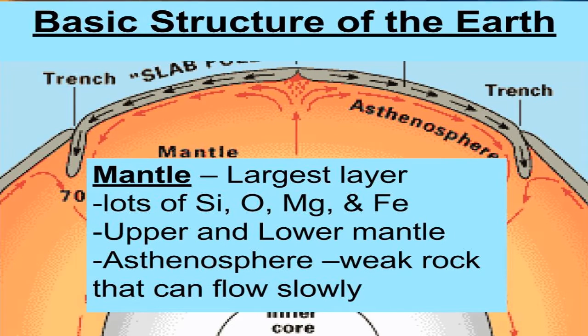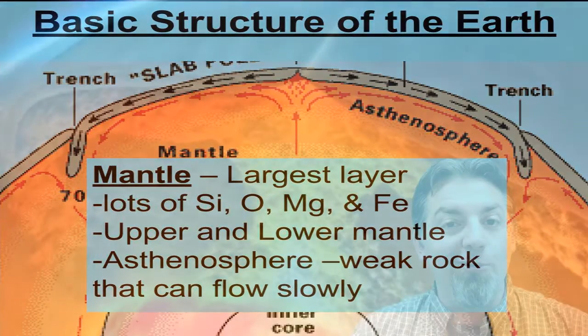Remember, the asthenosphere is a part of the mantle. And this is a weak layer of rock that can flow slowly. And you have those convection currents. The transfer of heat in the mantle that's thought to be the force behind plate movement.